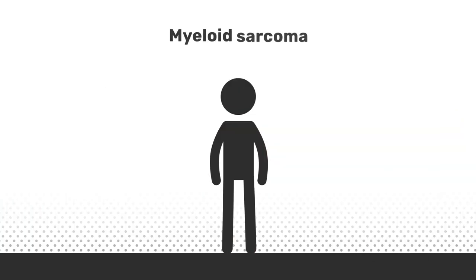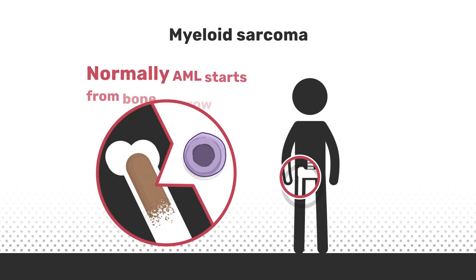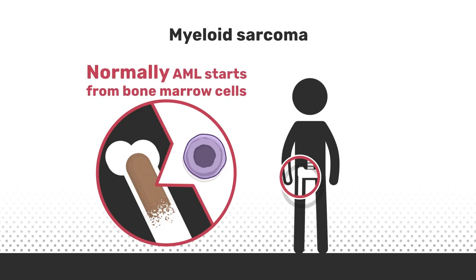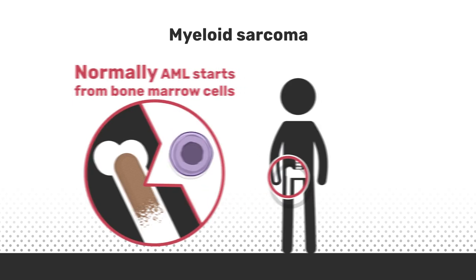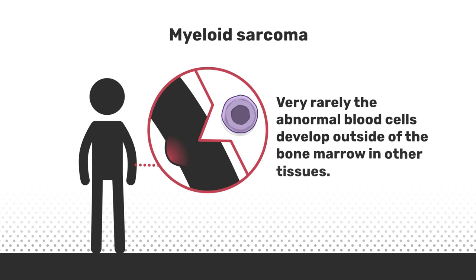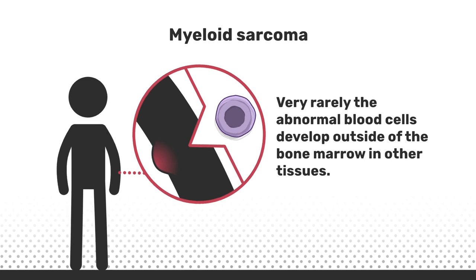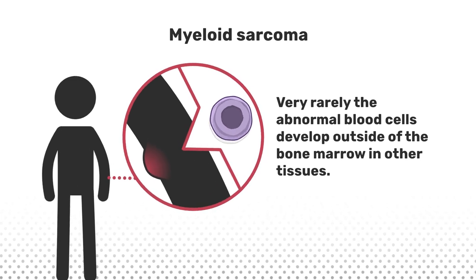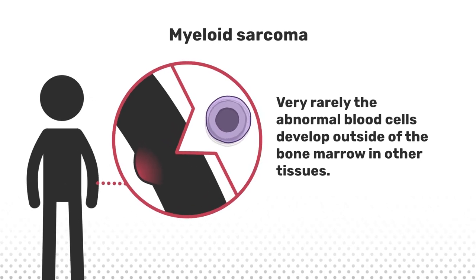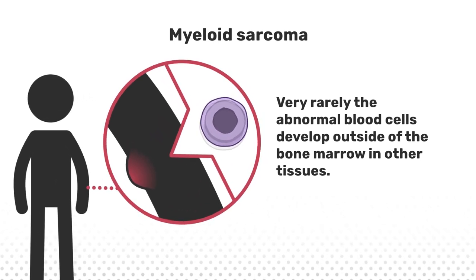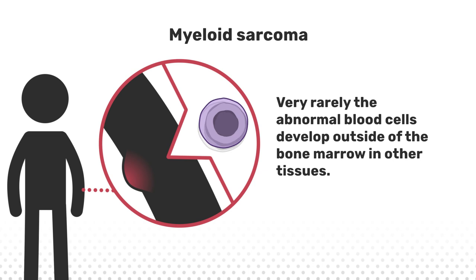Myeloid sarcoma. Normally, AML starts from bone marrow cells. Very rarely, the abnormal blood cells develop outside of the bone marrow in other tissues. These abnormal blood cells can accumulate in any site of the body, such as under the skin, often forming a lump.